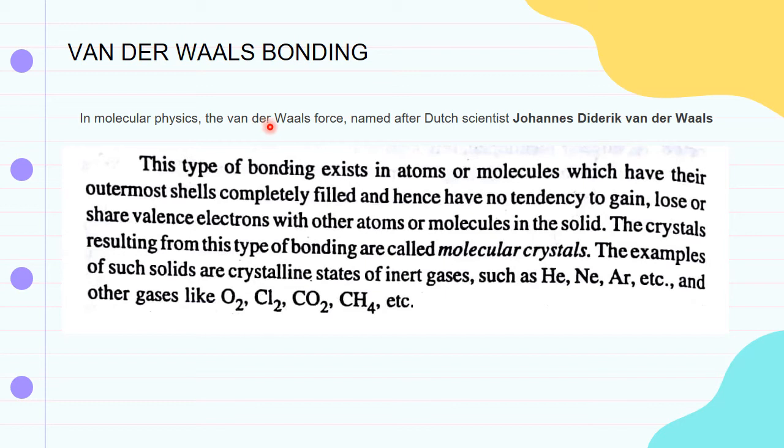Van der Waals bonding is formed in inert atoms. Inert atoms have completely filled outermost shells. Because their outermost shells are completely filled, they behave differently from other atoms.